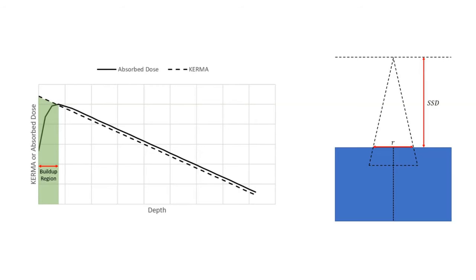You can see that the KERMA reaches a maximum right at the surface but the absorbed dose doesn't reach a maximum until a little bit further downstream. What's happening here is that the photon beam is interacting at the surface and giving energy to those charged particles, and that's why the KERMA is a maximum at the surface. But those secondary charged particles are actually carrying their energy further downstream and depositing most of their dose downstream, so the dose is actually building up, hence the term the buildup region.